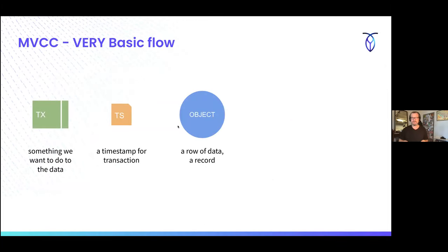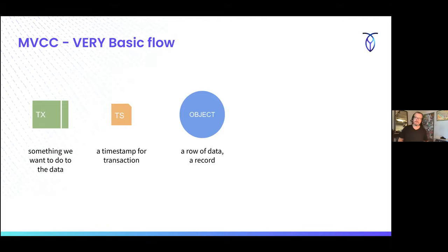Now let's talk about consistency of data when it comes to time. One of the biggest challenges in a distributed system — when you're writing data and you have writes coming through on two services trying to write to basically the same source — the concept of time becomes really important: first in, first out, last in, first out — what are you implementing? MVCC is multi-version concurrency control. We're using this to implement serializable isolation in our database, guaranteeing based on time that each transaction coming into the system is going to be correct across every single node.